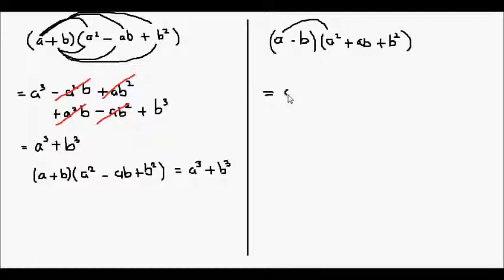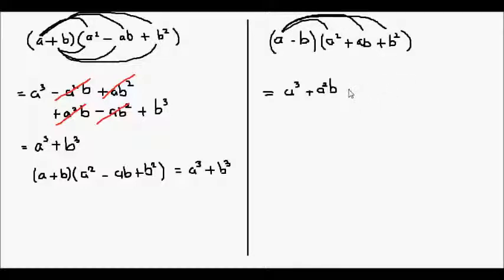a times a squared is a cubed. a times ab will give us a squared b. And a times b squared will give us ab squared. Minus b times a squared will give us negative a squared b.